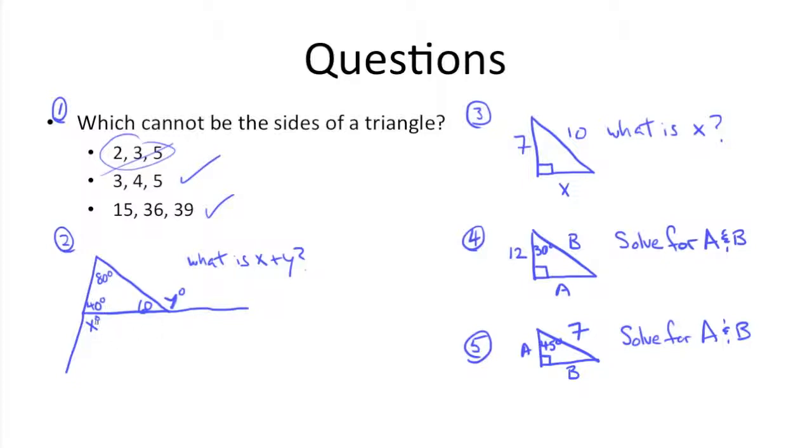If we know that, we know that x and 40 are a supplementary pair, because this is a straight line, which means that x is 140. And we know that y, since this is the same thing over here, has to add up to 120, because 60 and 120 add up to 180. So if we know that, we know that x plus y add up to 260.